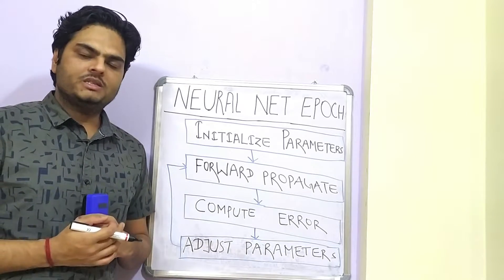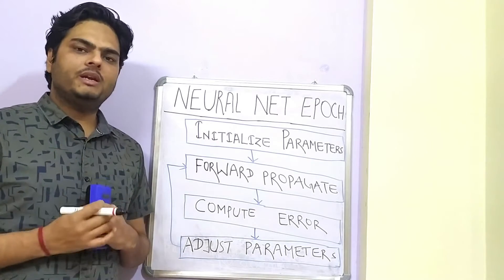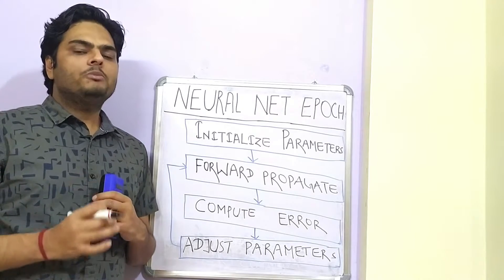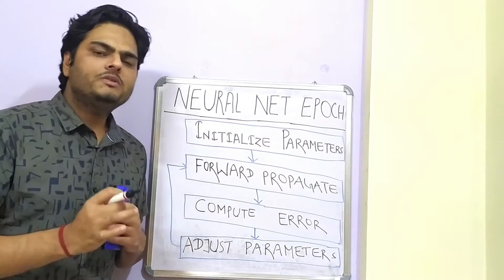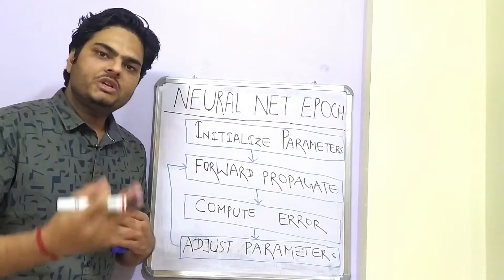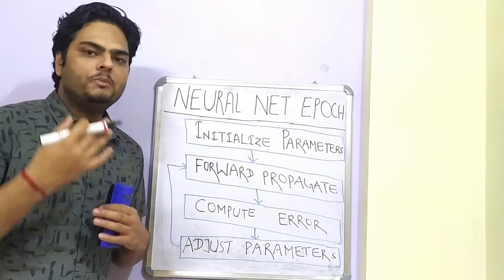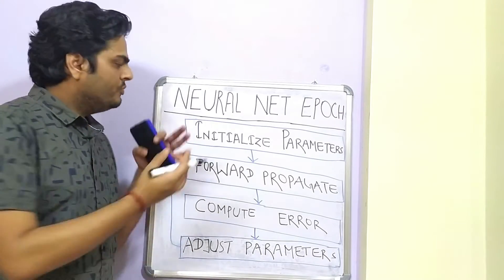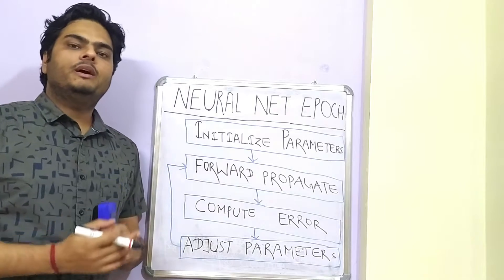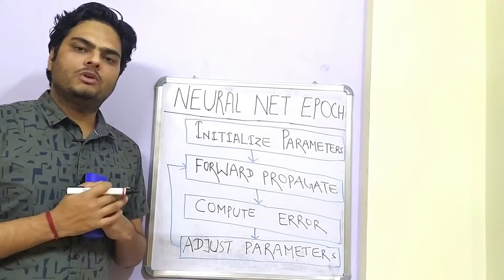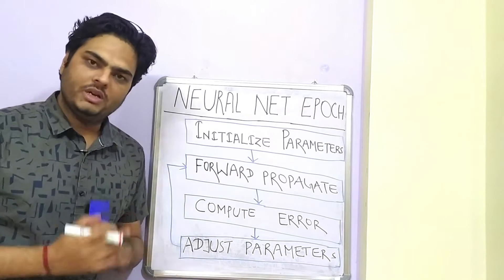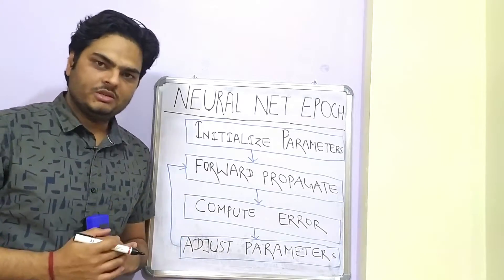Welcome to Unfold Data Science. My name is Aman and I am a data scientist. In this video, I am going to explain every piece of forward propagation, backward propagation, an epoch, the weight adjustment, the error improvement, and how the complete neural network works from the beginning to end. Let's start the discussion.